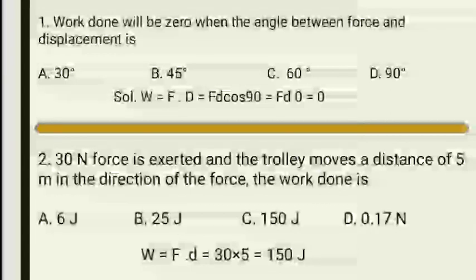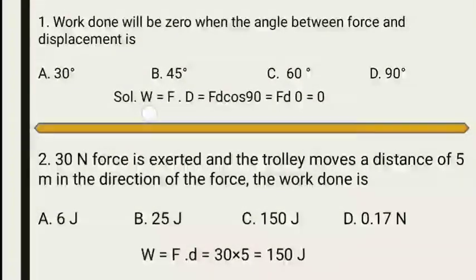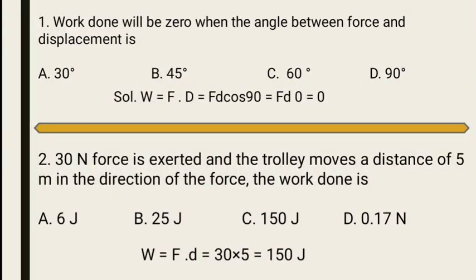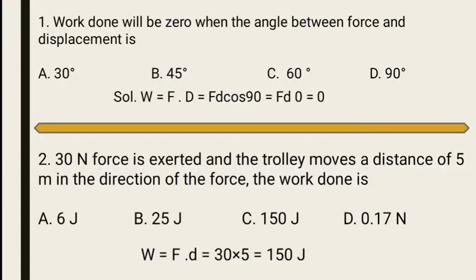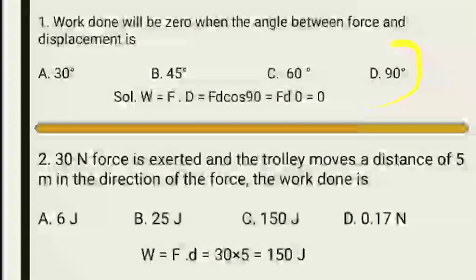By definition, work W equals F dot d. The dot product formula means we have cosine of the angle between force and displacement. If we put 90°, cosine of 90° equals zero, so work done is zero. This means when displacement and force are perpendicular to each other, work done is zero. Therefore the correct option is Option D: 90°.